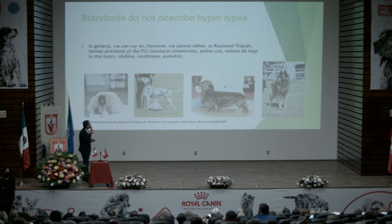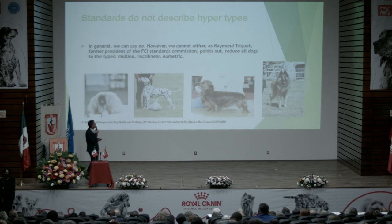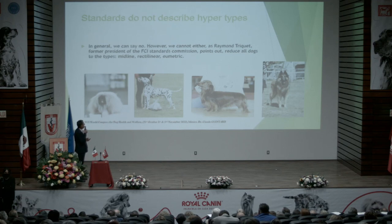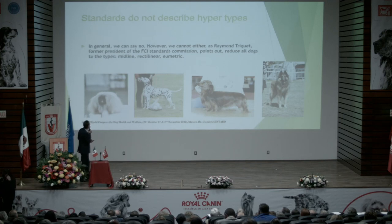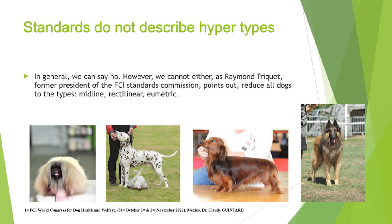For us this is much better than only the craniofacial ratio. We know there is a correlation between this ratio and BOAS, but it's only one character. When you test the animal with such a test, you test a lot of characters at the same time: open nostrils, length of the soft palate, size of the tongue, the trachea — and for us it's much better than testing only one character at a time.